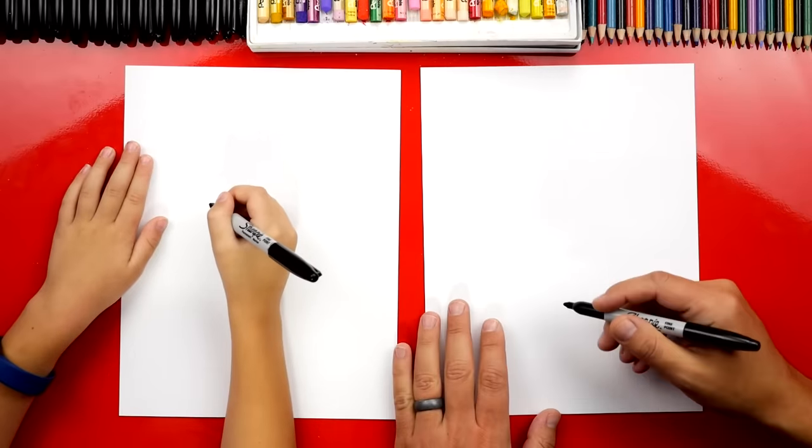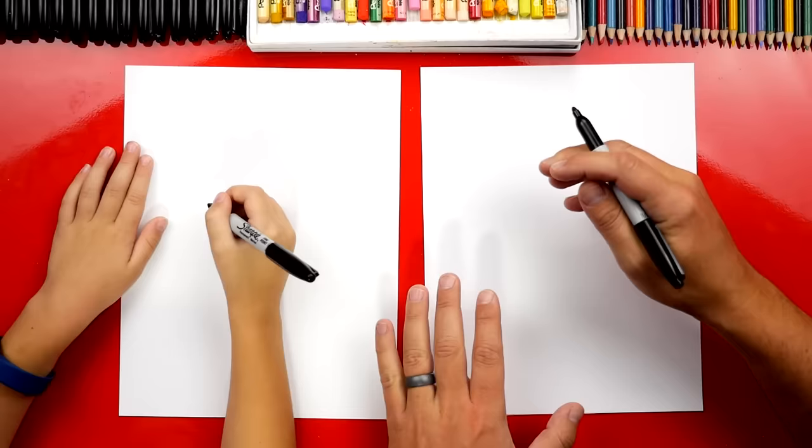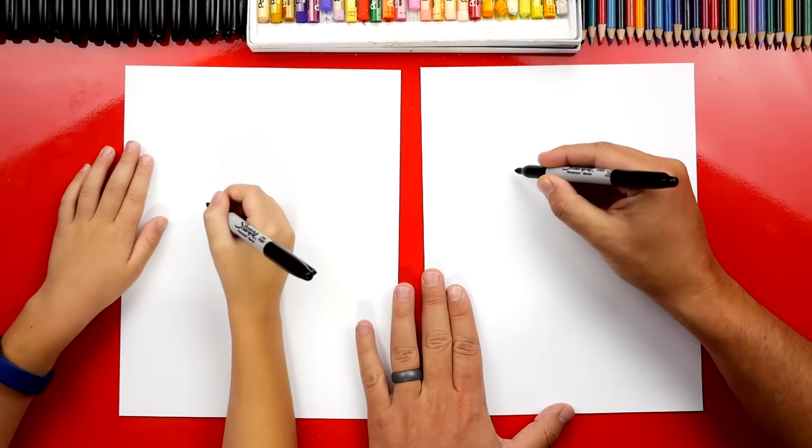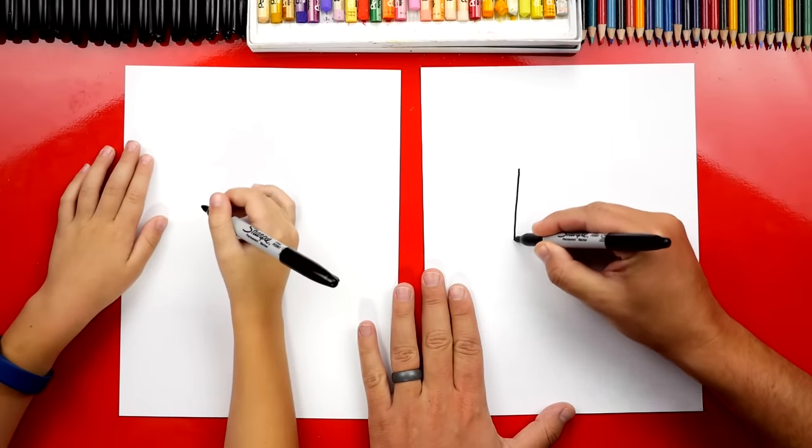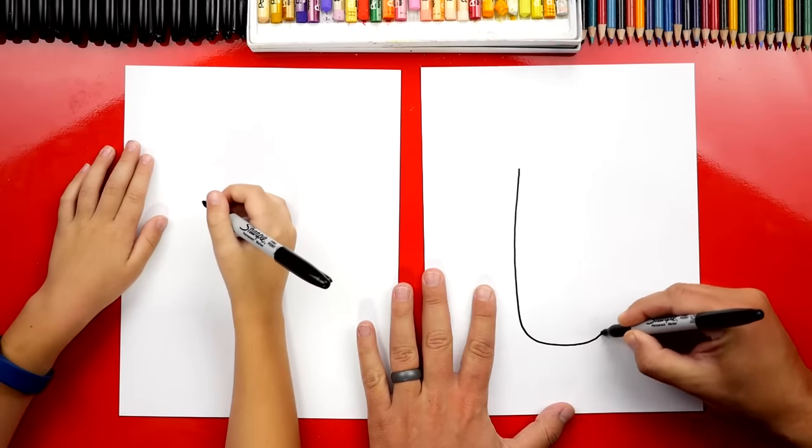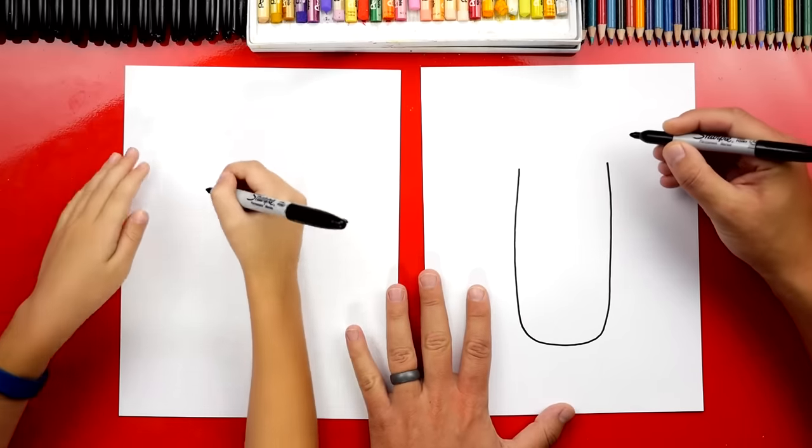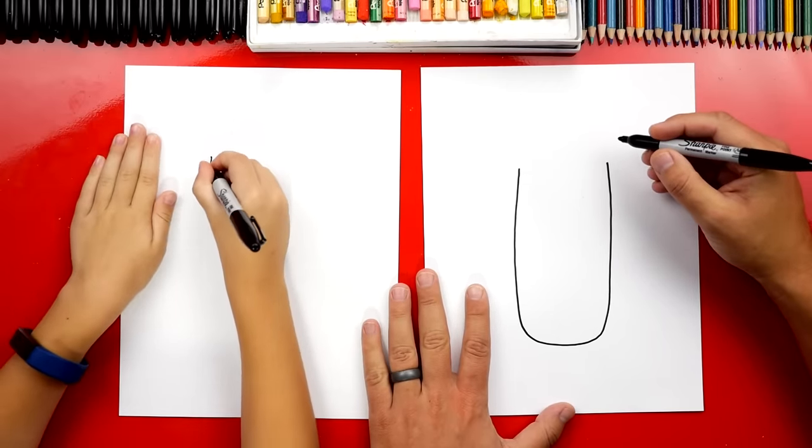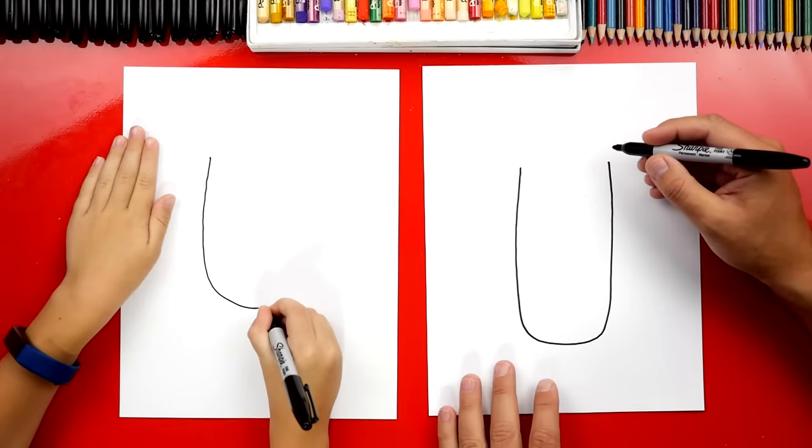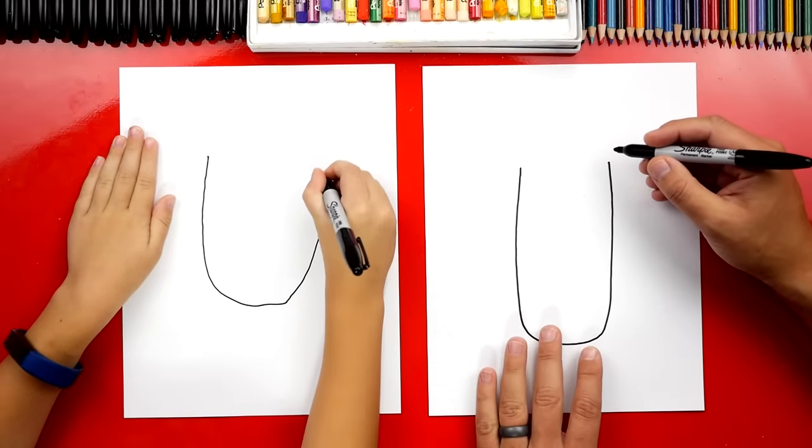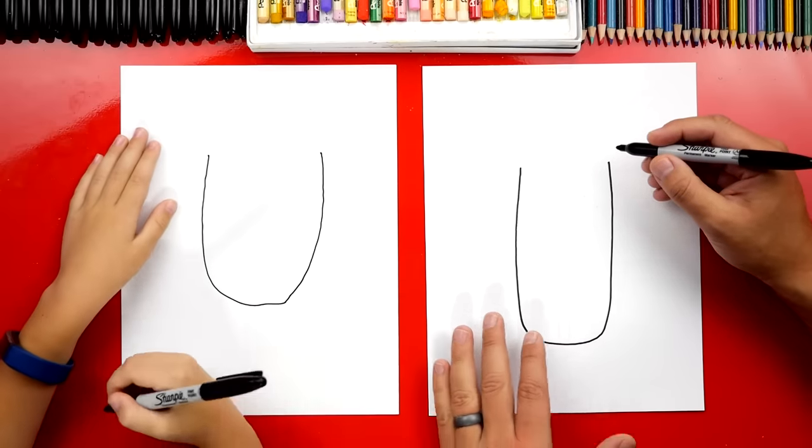Let's first draw a big U in the middle of our paper. This is for the main shape of our burrito. We're going to start right here and come down like this, and then around, and then back up. Big burrito. Oh, I like the shape of yours. It's got a lot of stuff inside of it.